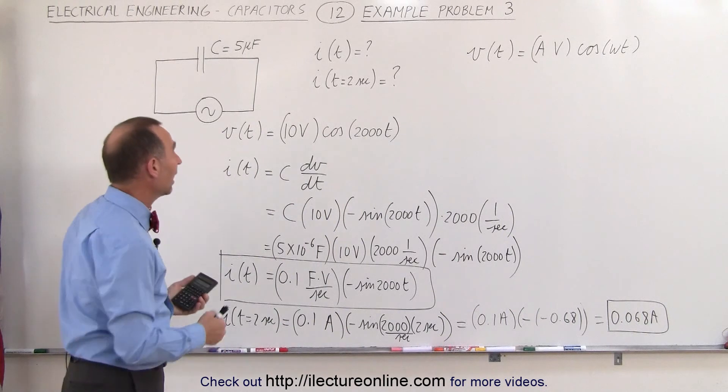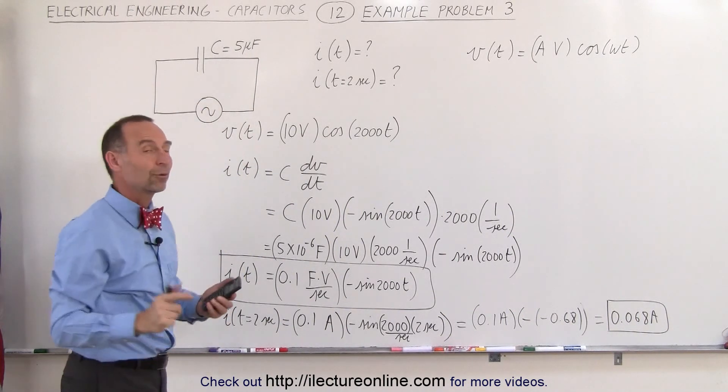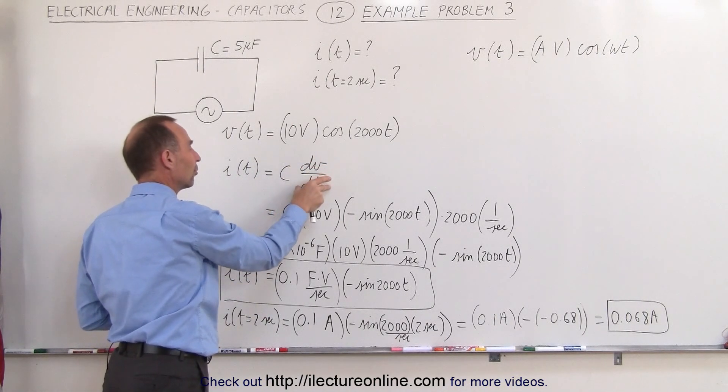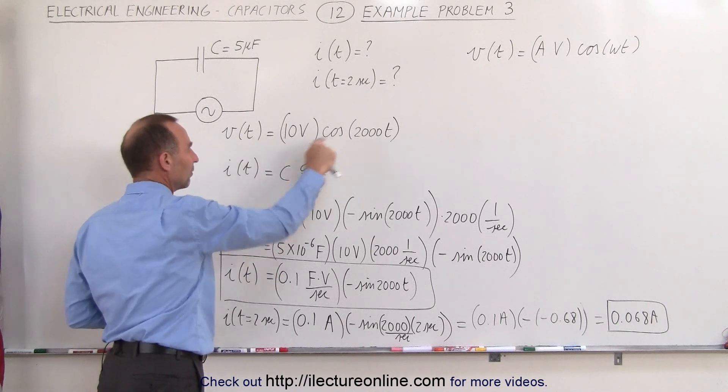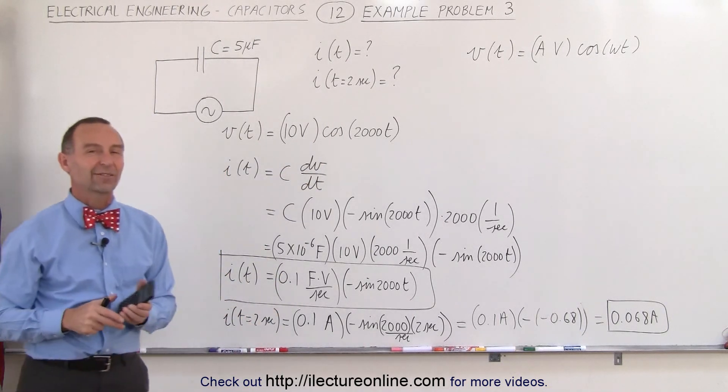So again, if we're given a voltage on a circuit that has a capacitor in it and we're trying to find the current, we realize that the current is equal to the capacitance times the change in voltage with respect to time. We take the derivative of that, then we evaluate that at the proper time. And that's how we do that.